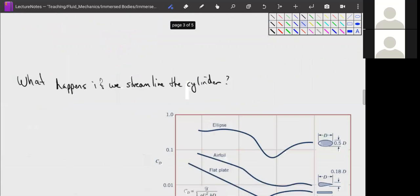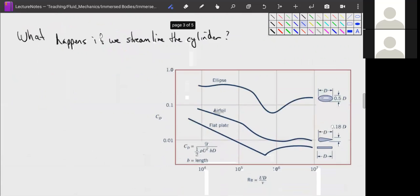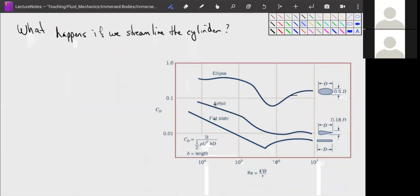So what happens if we streamline this cylinder? Well, we have to have a new chart because we have to do a whole new set of experiments because our geometry has changed. But if we streamline the cylinder, I'll just give you a hint here. Because we've streamlined it, we don't have pressure drag anymore. So it's going to have to be a lot larger.